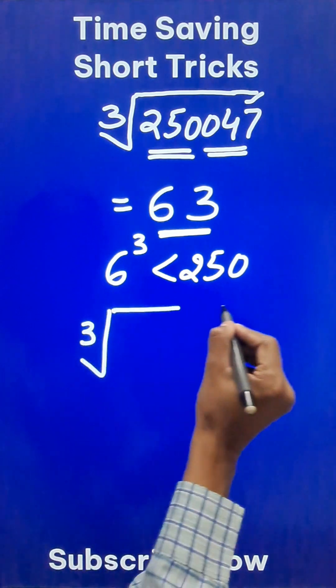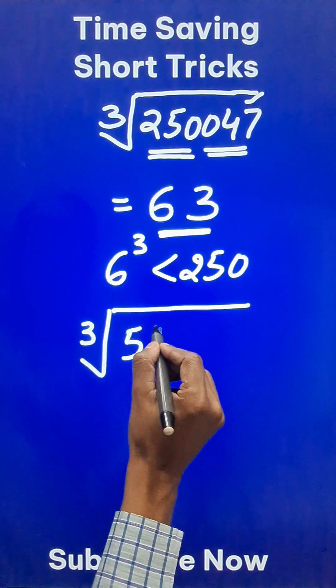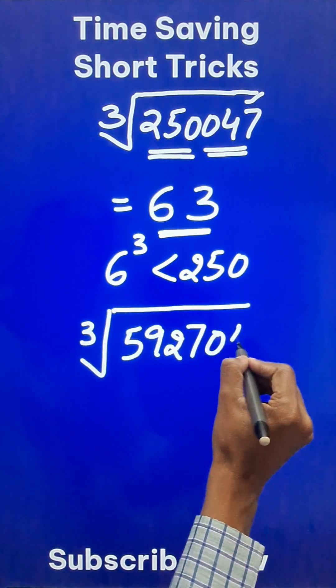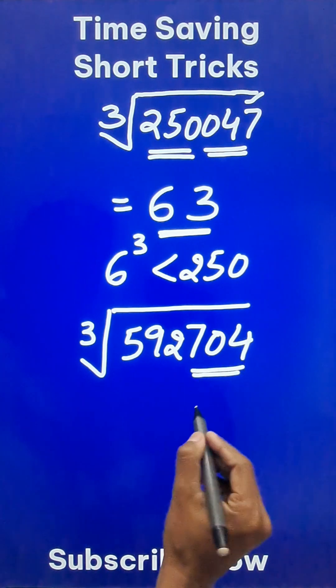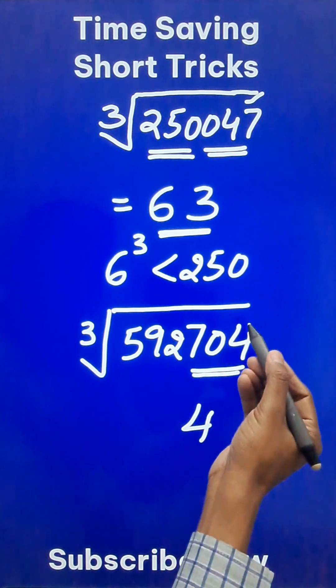Likewise, suppose you have the cube root of another big number like 5, 9, 2, 7, 0, 4. Now this triple ends in 4. Because this ends in 4, only 4 cube ends in 4. 4 cube is 64, right? Ending in 4.